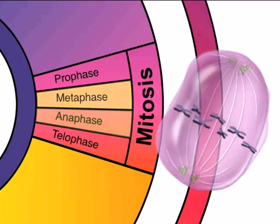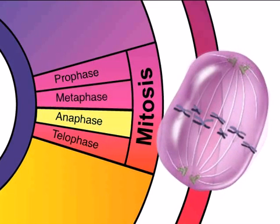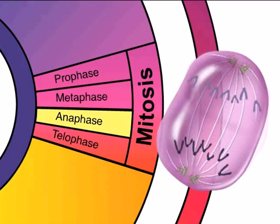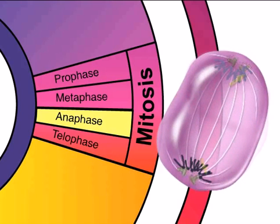In anaphase, the centromeres split, pulling sister chromatids to opposite sides of the cell. By the end of anaphase, 46 chromosomes lie at each side of the cell. When chromosomes are separated, each sister chromatid is considered a new chromosome.